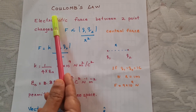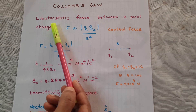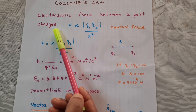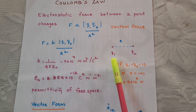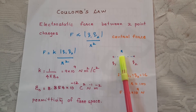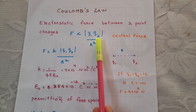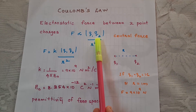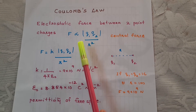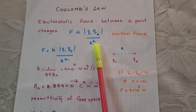In this class, let us learn Coulomb's law. Coulomb's law gives an expression for the electrostatic force between two point charges Q1 and Q2 separated by a distance. The force is directly proportional to the product of the charges Q1 and Q2, and inversely proportional to the square of the distance R square.